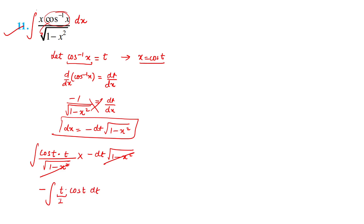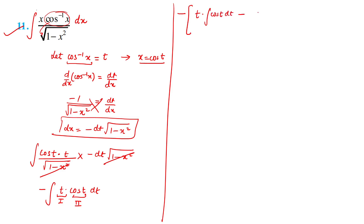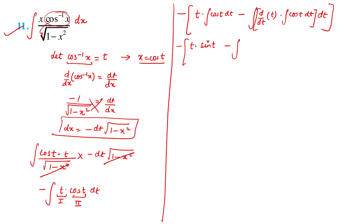Now we integrate −∫t·cost dt by parts, with t as first function and cost as second. This gives: −[t·sint − ∫sint dt] = −[t·sint − (−cost)] = −t·sint − cost + C. Simplifying: −t·sint + cost + C... or written as −(t·sint − cost) + C.